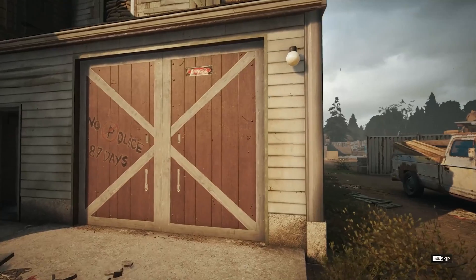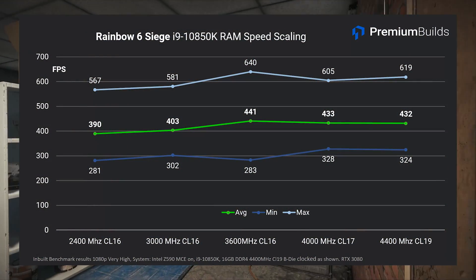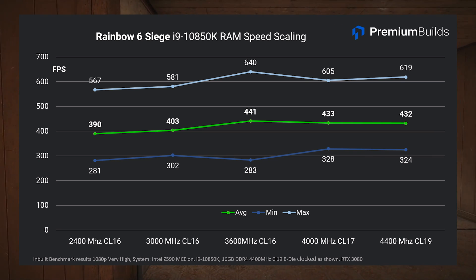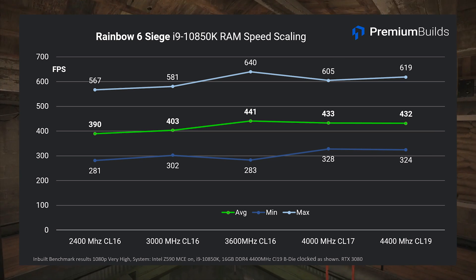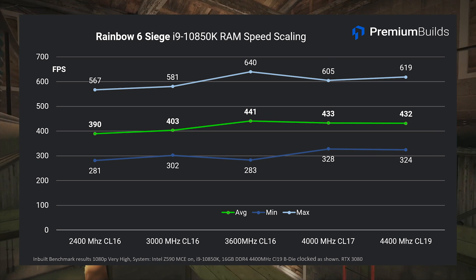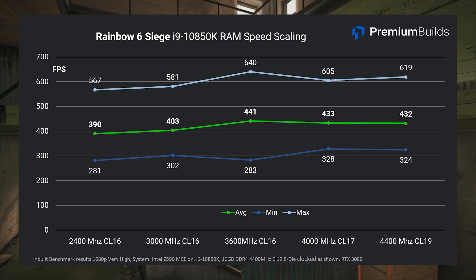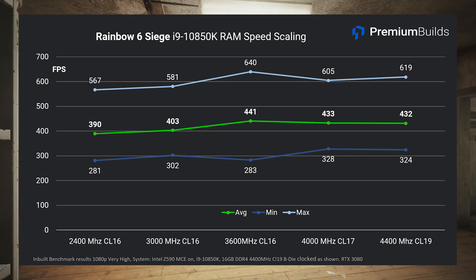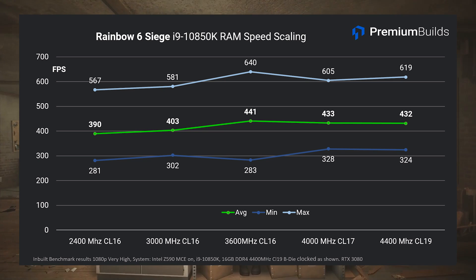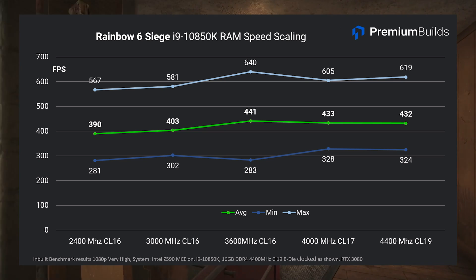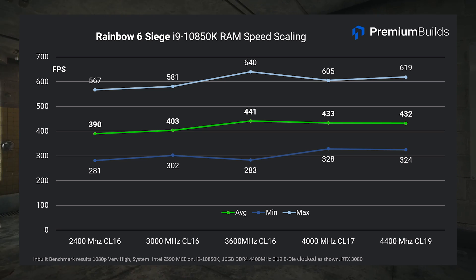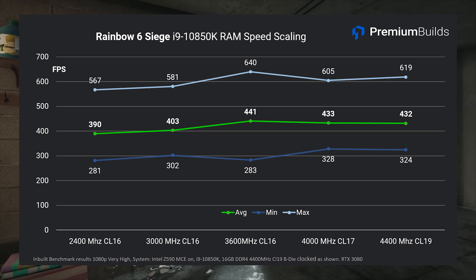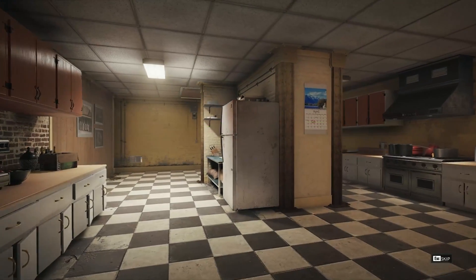Diving into this a bit deeper, here's Rainbow Six Siege's benchmark - a fast-paced shooter where every frame per second matters. Again on the i9-10850K, this benchmark is consistent and RAM speed sensitive. We get a slight break to the trend with best performance again at 3600MHz CL16, and then performance softens at 4000MHz CL17 and 4400MHz CL19. The overall latency and the looser timings required to keep RAM stable at those very high speeds becomes detrimental to performance, but only slightly.